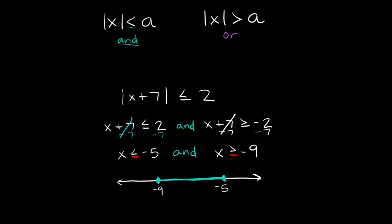Whenever you have closed circles, you use brackets for interval notation. So we have two closed circles, meaning we use two brackets, going from negative 9 to negative 5: [-9, -5]. One last thing — whenever we use the word 'and', your graph should look like a single connected segment. It should not be broken up into two different graphs, because that's what an 'or' type graph looks like.